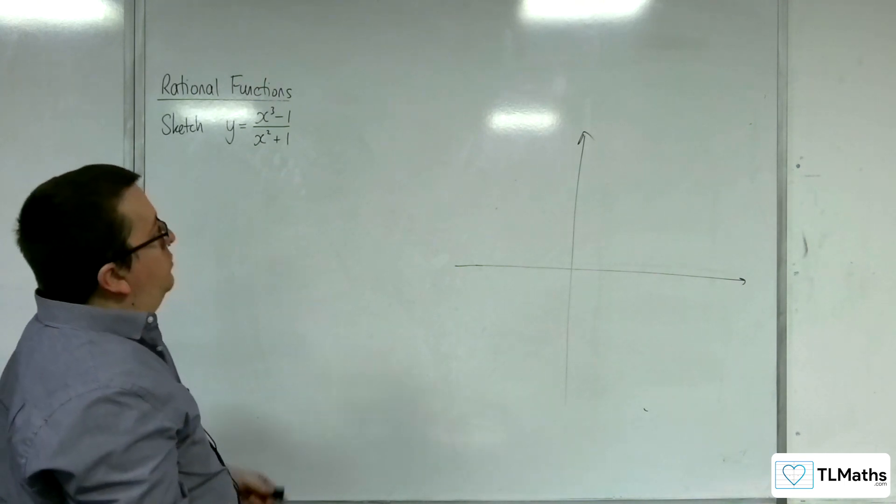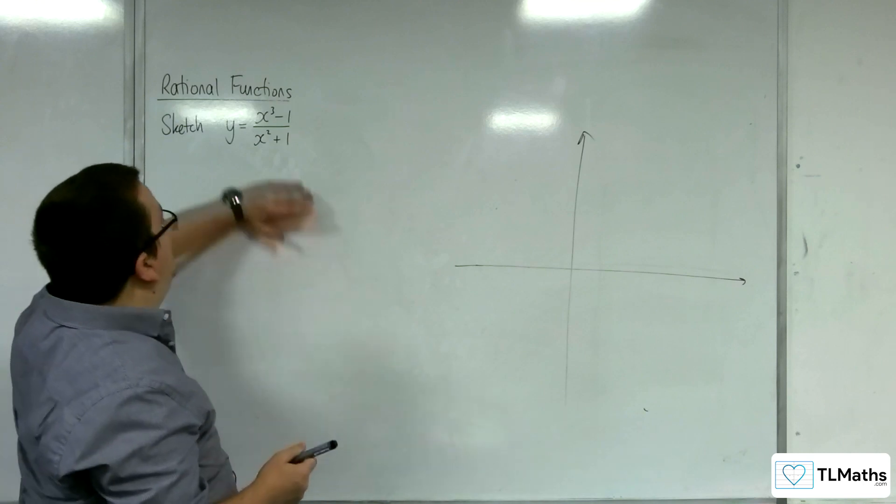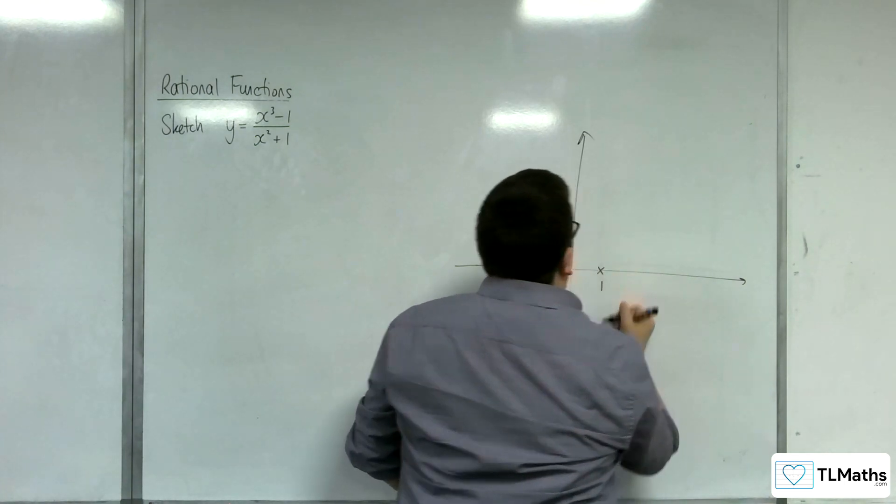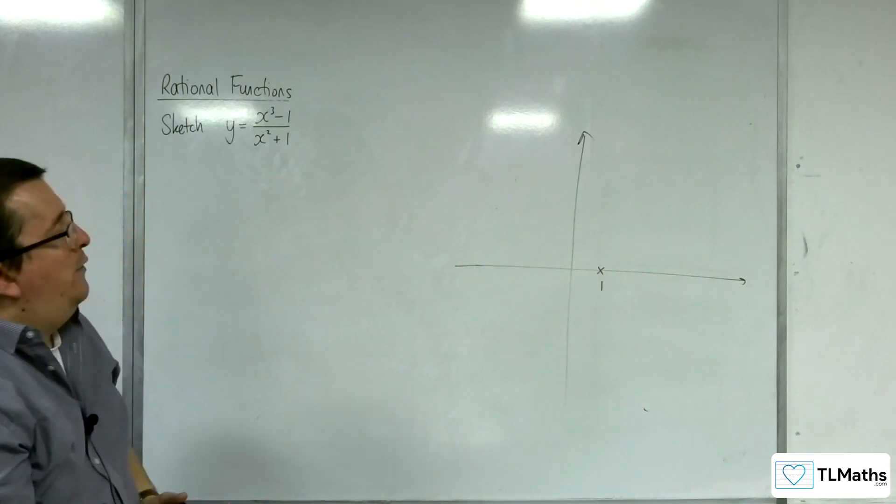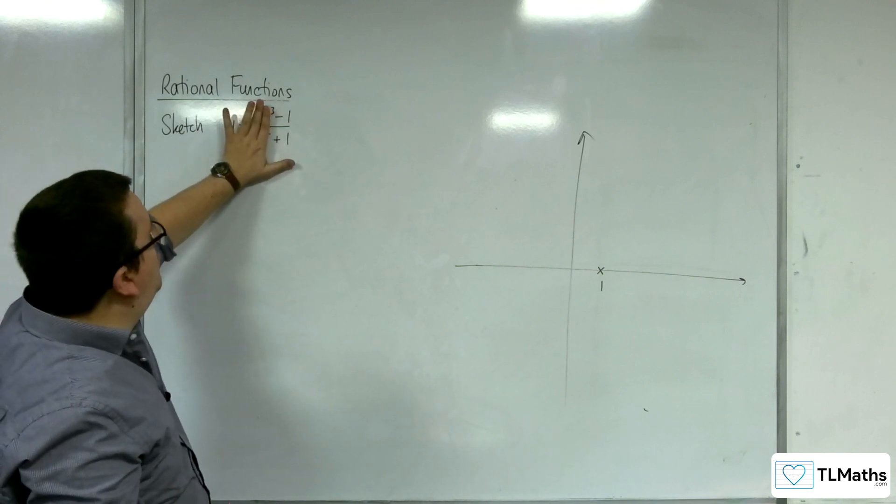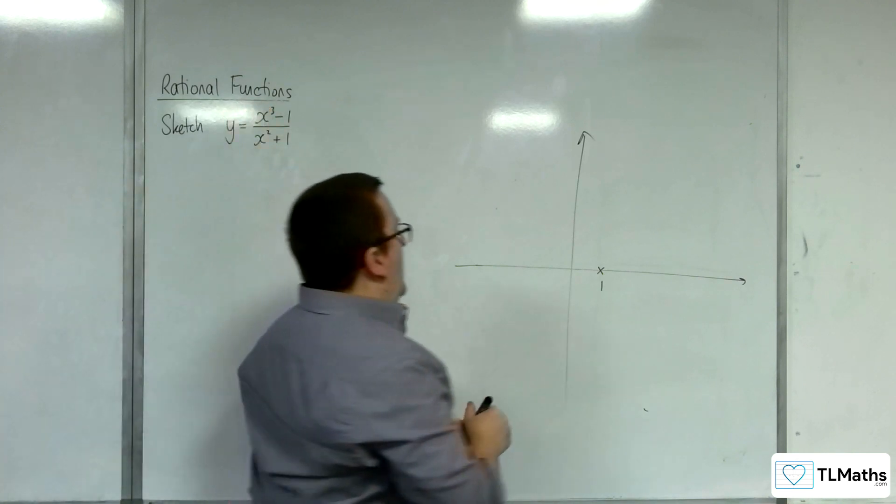How about where it crosses the x-axis? That's when the numerator is 0, so that will be when x is 1. How about where it crosses the y-axis? That's when x is 0, so we'll have minus 1 over 1, so at minus 1.